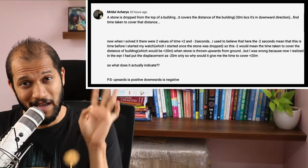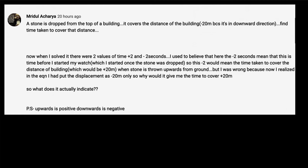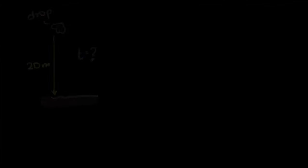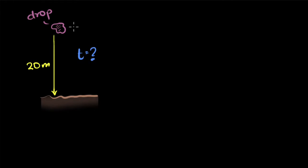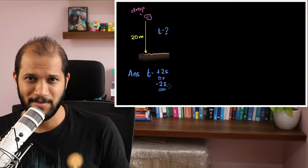Mridul Acharya asks this question. He's solving a problem in which you drop a stone from some height and you're asked to calculate what the time is. He gets two answers: time equals plus two seconds and minus two seconds. And usually we just ignore the negative time — we say negative time doesn't make any sense.